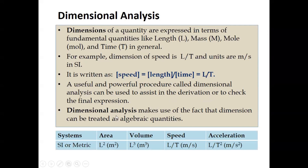In the metric system, area has units of meters squared, so its dimension is L². Volume has units of meters cubed — dimension L³. Speed is distance divided by time — dimension L/T, with units meters per second. Acceleration has units of meters per second squared, so its dimension is L/T² or equivalently L·T⁻².